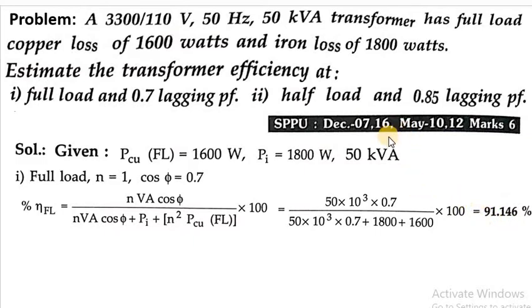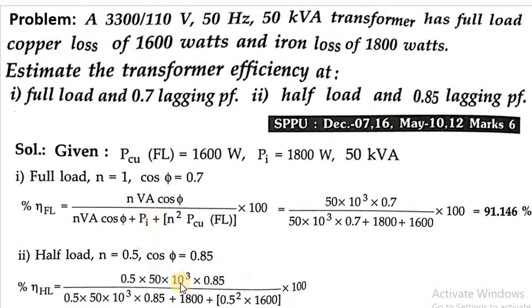To calculate the efficiency at half load condition, the power factor is 0.85 lagging. As it is half load, n equals 0.5. Half load means 50% of 100%, so the ratio is 1 by 2, giving 0.5. The power factor cos φ equals 0.85. We will use the same formula as given in the above condition.